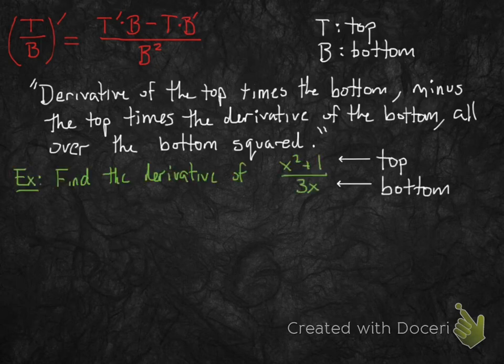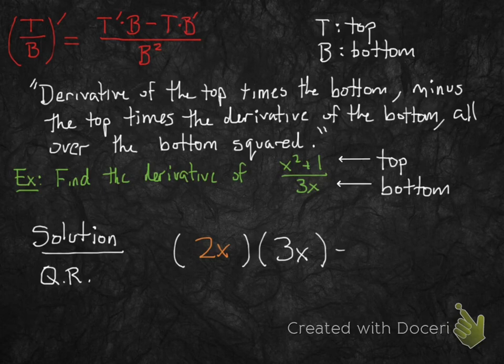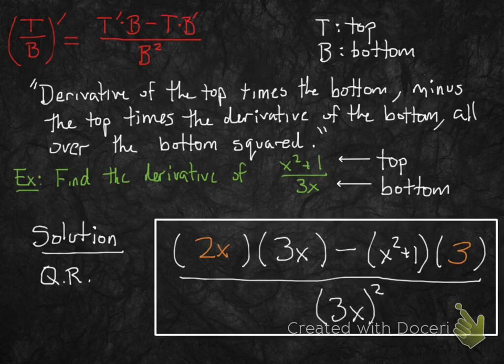Let me show you how to use this in an example. Let's find the derivative of x squared plus 1 divided by 3x. The top is x squared plus 1 and the bottom is 3x, so we're going to need the quotient rule. The first part of the quotient rule tells you to take the derivative of the top — derivative of x squared plus 1 is 2x — then multiply by the regular bottom, you leave the bottom alone. Minus the top times the derivative of the bottom, which is just 3. All divided by the bottom squared. And that's it.